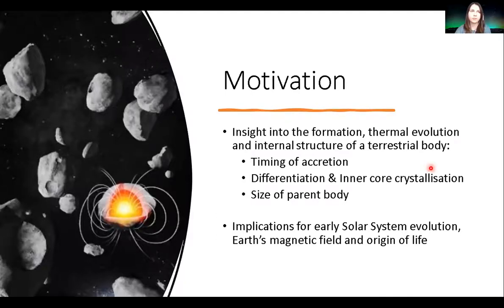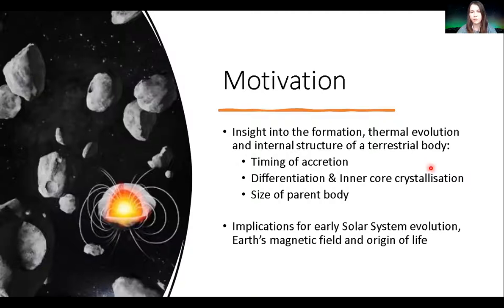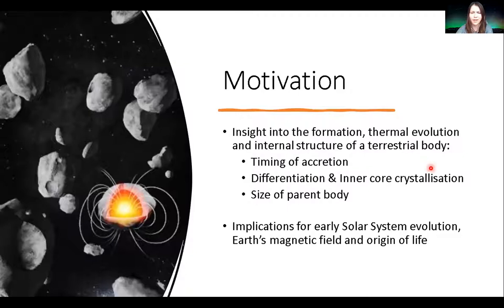We can use magnetic studies to get insight into the structure of ancient terrestrial bodies. We can get a lot of information like the timing of their creation, whether they differentiated, whether they formed an inner core, the size of the parent body, and basically really fascinating information about the early solar system — with implications for solar system evolution, early magnetic fields, and Earth's own magnetic field through comparisons.